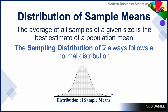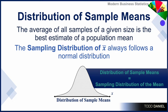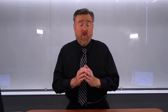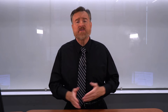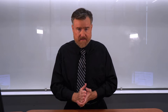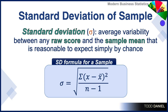When you hear the phrase "distribution of sample means," it is referring to exactly the same thing as "sampling distribution of the means." When we had an individual sample, we could calculate a mean of that sample and the variability around that mean. That variability is called a standard deviation — the average variability between any raw score and the sample mean that is reasonable to expect simply by chance. And we learned the formula for calculating that standard deviation within a sample.